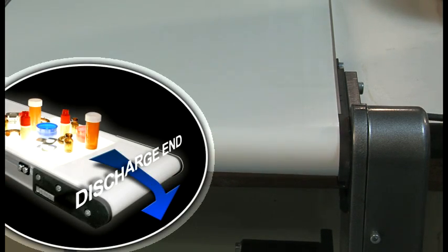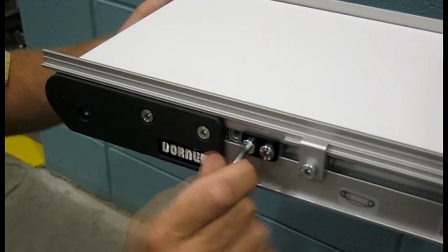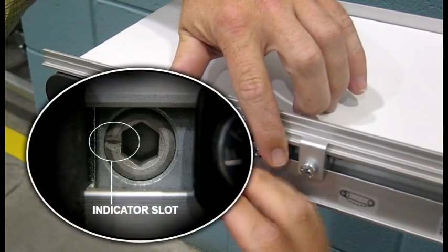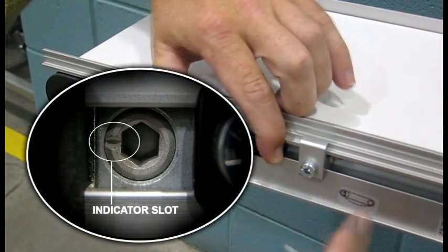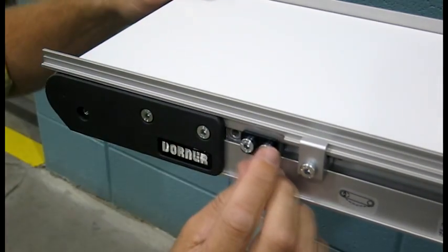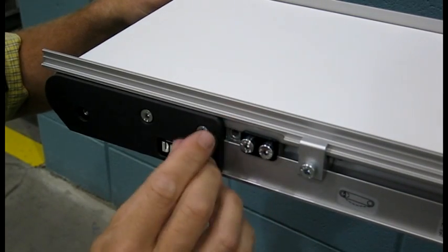Non-V-guided belts may require a tracking adjustment. When adjusting belt tracking, always adjust the discharge end of the conveyor first. On both sides of the conveyor, loosen the two cam fastening screws. Adjust the cams until the indicator slots are horizontal and facing the end of the conveyor. Then slide the cam assemblies against the headplates and re-tighten the cam fastening screws.